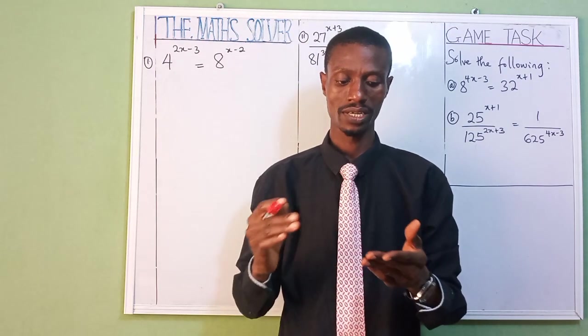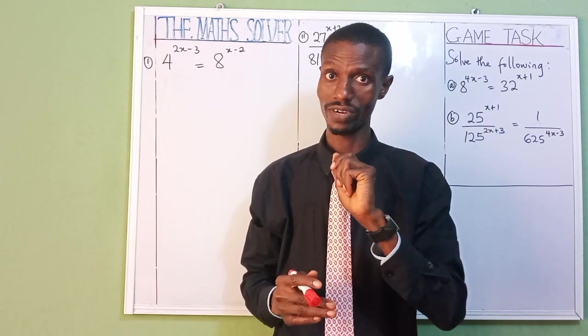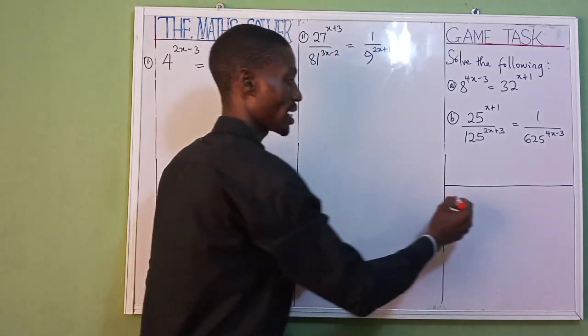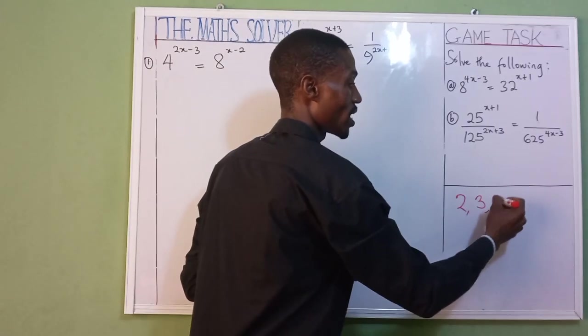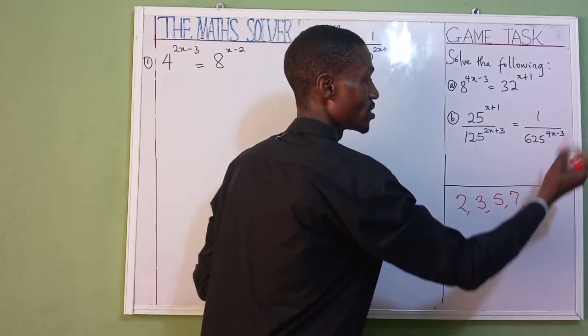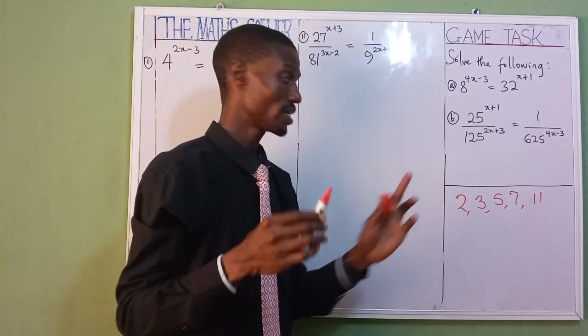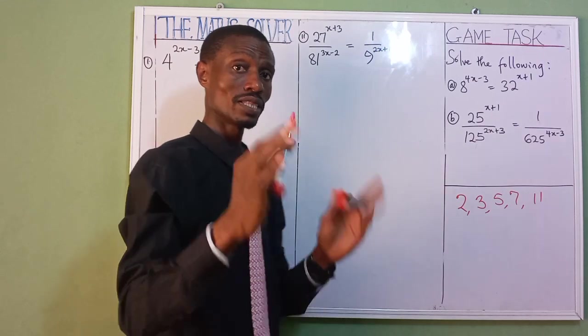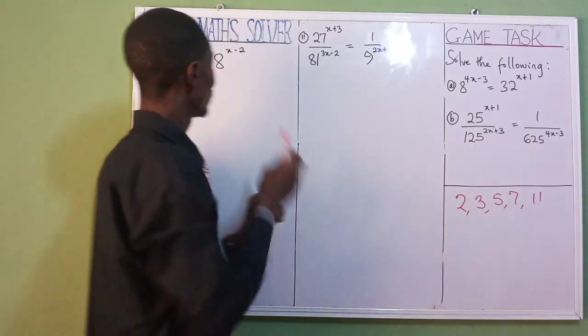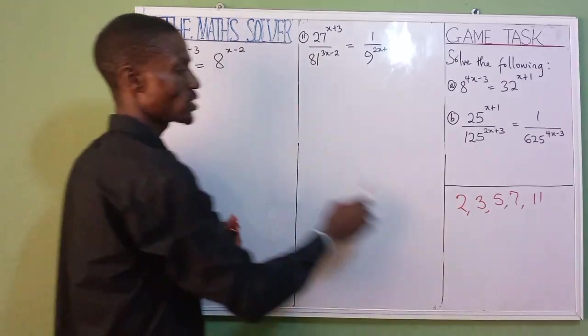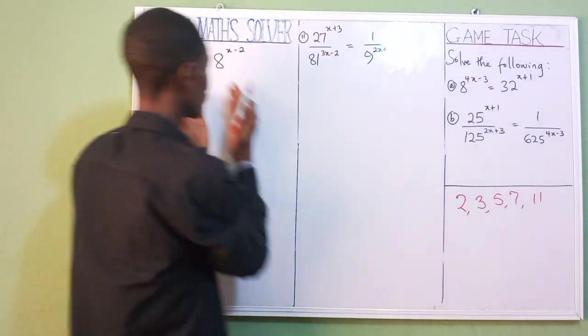What are prime numbers? Prime numbers are the numbers that can be divided by one and itself. They have two factors. Examples of prime numbers are: two, three, five, seven, eleven, and so on.